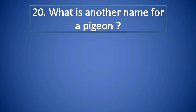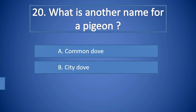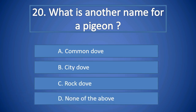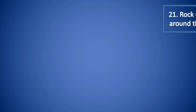Question Number 20: What is another name for a pigeon? A. Common Dove, B. City Dove, C. Rock Dove, D. None of the above. Right answer is C. Rock Dove.